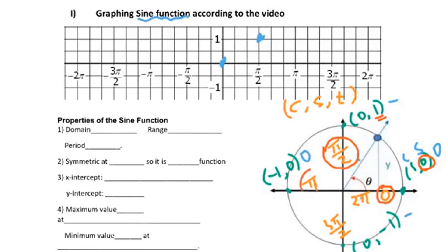Keep going. At pi, we have 0 — that's over here. At 3 pi over 2, that's negative 1. Then back at 2 pi, we still have 0 — that's over here. We call these 5 points the key points. Whenever you want to draw the sine function, you need to find out these 5 key points. So I smoothly connect them.